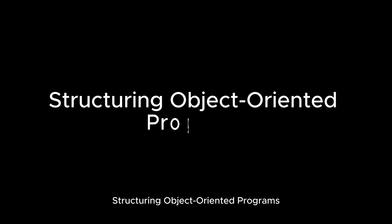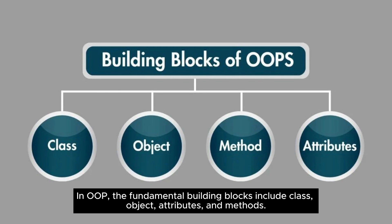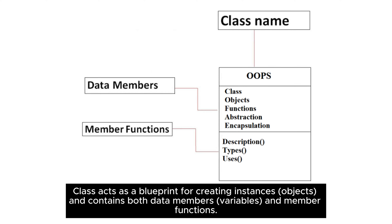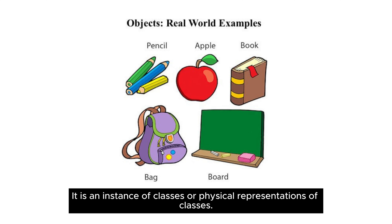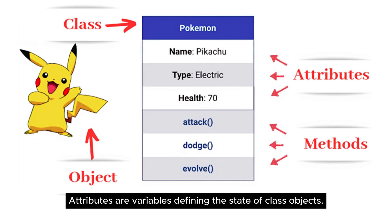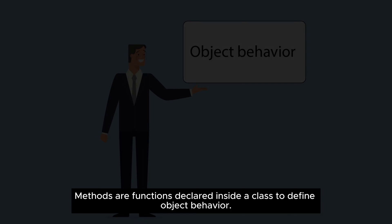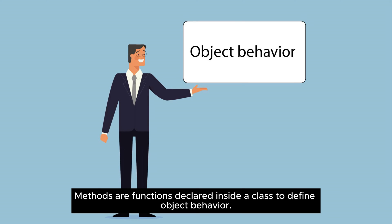Structuring object-oriented programs. In OOP, the fundamental building blocks include class, object, attributes, and methods. Class acts as a blueprint for creating instances, objects, and contains both data members, variables, and member functions. Objects are instances of classes or physical representations of classes. Attributes are variables defining the state of class objects. Methods are functions declared inside a class to define object behavior.